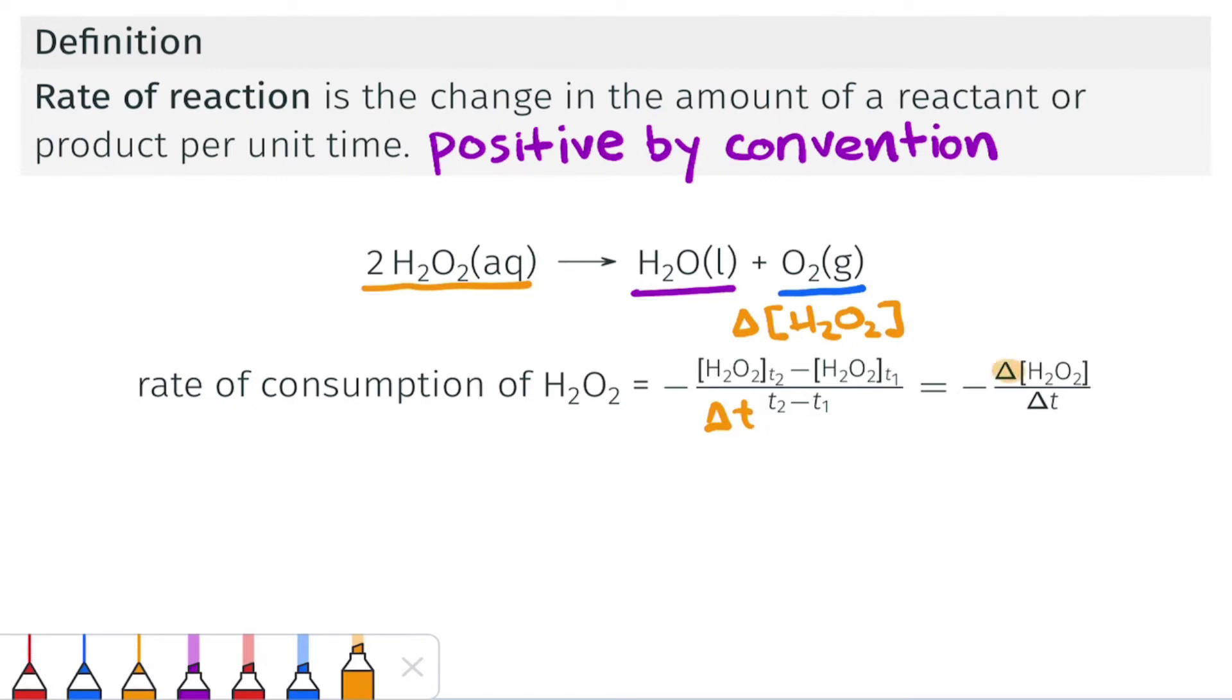Notice that here, because H2O2 is a reactant, this delta H2O2 has a negative value. H2O2 is disappearing because it's a reactant as the reaction proceeds.